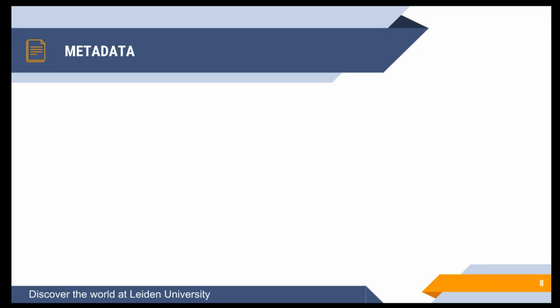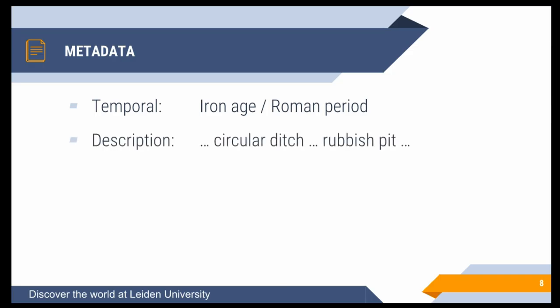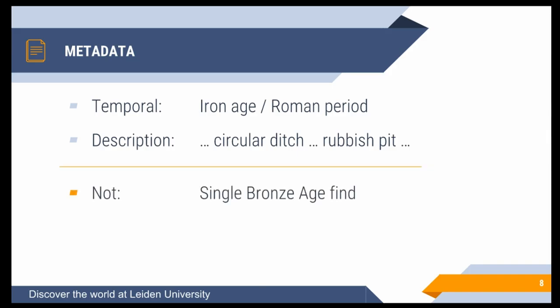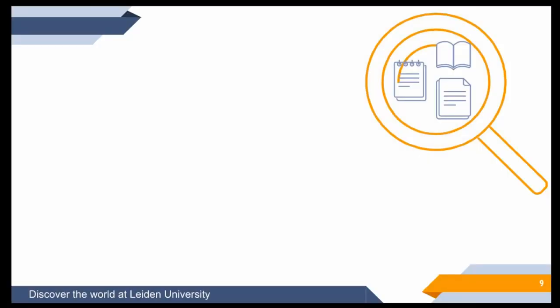Metadata is basically a broad description of a document: author, title, general information like that. For these reports you might have temporal information — for example that an excavation uncovered material from the Iron Age and Roman period — or keywords like 'circular ditch' or 'rubbish pit.' However, archaeologists generally want to search more fine-grained: they might be interested in a single Bronze Age find that didn't warrant inclusion in the temporal metadata, or a specific find type too specific to mention in the description. We really need to look through all of the text, not just the metadata.